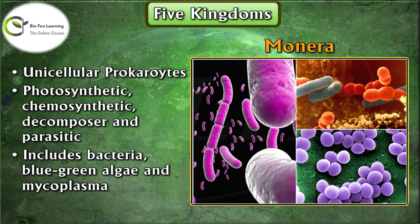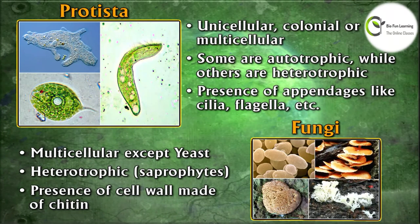The kingdom Monera consists of unicellular prokaryotes. They are photosynthetic, chemosynthetic, decomposers, and parasitic. For example, bacteria, blue-green algae, and mycoplasma. Kingdom Protista includes protists — single-celled organisms. Some are autotrophic while others are heterotrophic. They have appendages like cilia and flagella. For example, amoeba and euglena. The kingdom Fungi consists of multicellular organisms — mushrooms and molds — except yeast, which is not multicellular. They are heterotrophic and have cell walls made up of chitin.